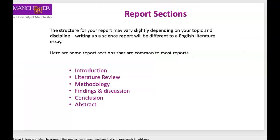Looking at a slide from Manchester University — one of the best universities for providing resources on the EPQ — they talk about the structure of the report: introduction, literature review, methodology, findings and discussions, conclusion, and the abstract last. The abstract is the overview of your argument, usually coming before the introduction. It's a very short piece of writing, at most around 200 words. I'll do a separate video on this. The methodology and literature review will depend on what kind of report you're writing.